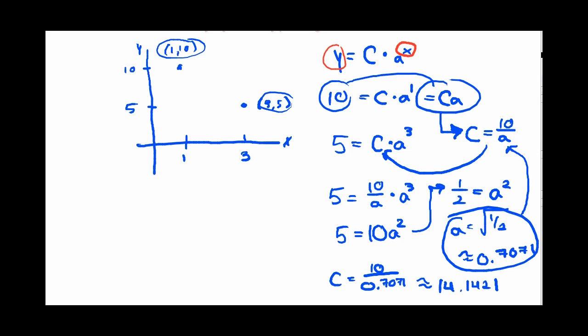So now I've done it. I now know what a is, and I even know what C is. And that means I can go back here to my framework formula and fill it in, and here's what it looks like. This is y equals 14.1421 times, here's the a, 0.7071 to the x power, and that's a full-blown exponential function.